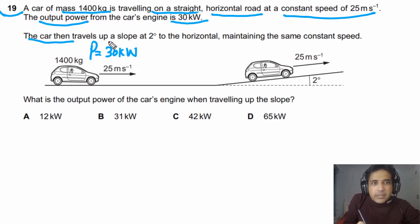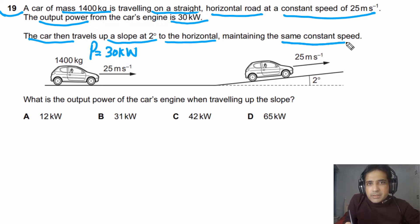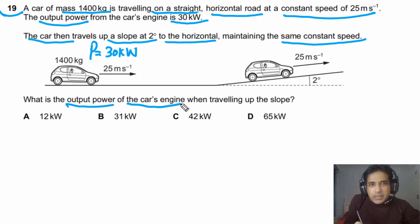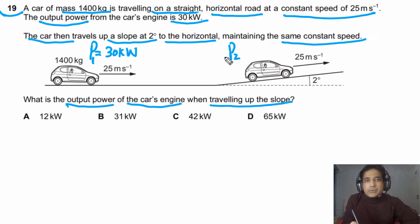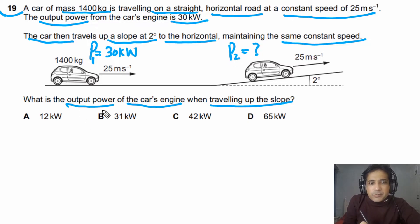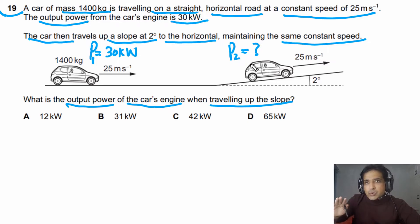The car then travels up a slope at two degrees to the horizontal, maintaining the same constant speed. What is the output power of the car's engine when traveling up the slope? We can call the original power P1 and the new power P2. The first thing to understand is that if you need to go up the slope, power has to be greater.